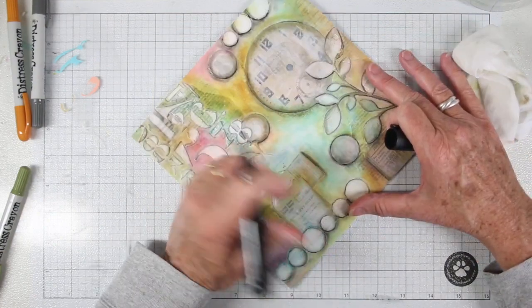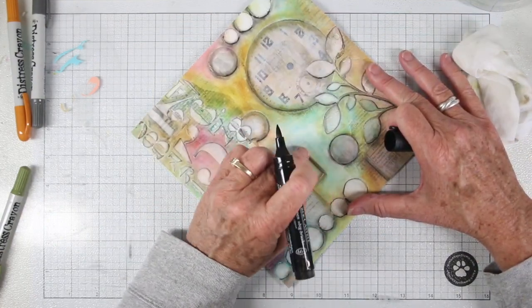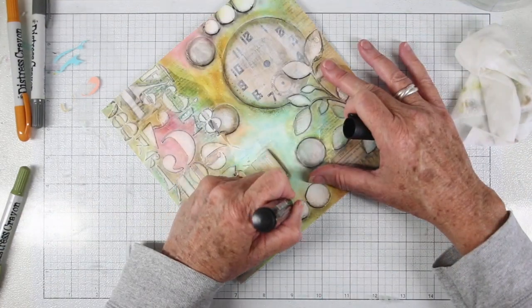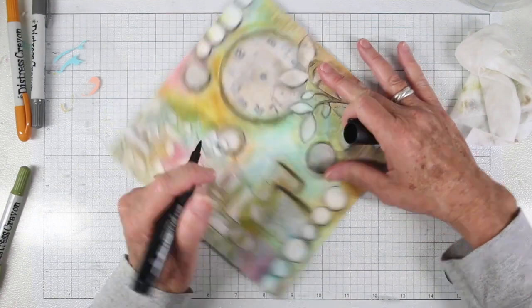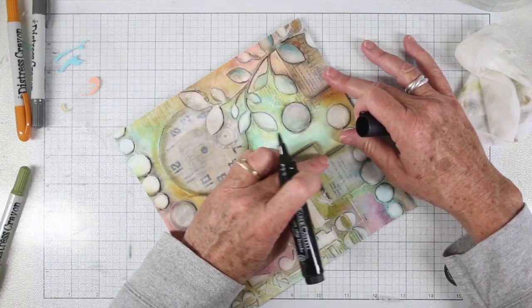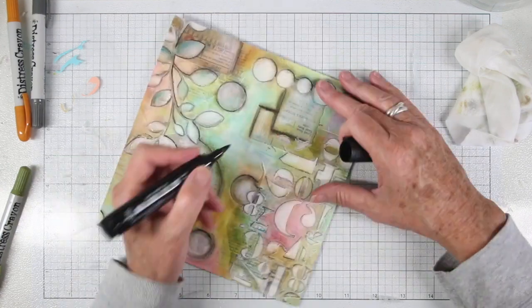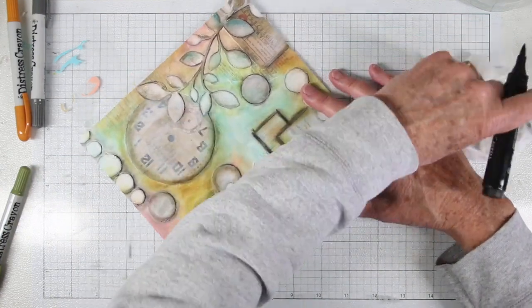Next I'm using my big Stamper's Brush, the black also from Faber-Castell, and I'm outlining some of the ephemera that was put down in the beginning. This will start giving me a lot of great depth to this page.